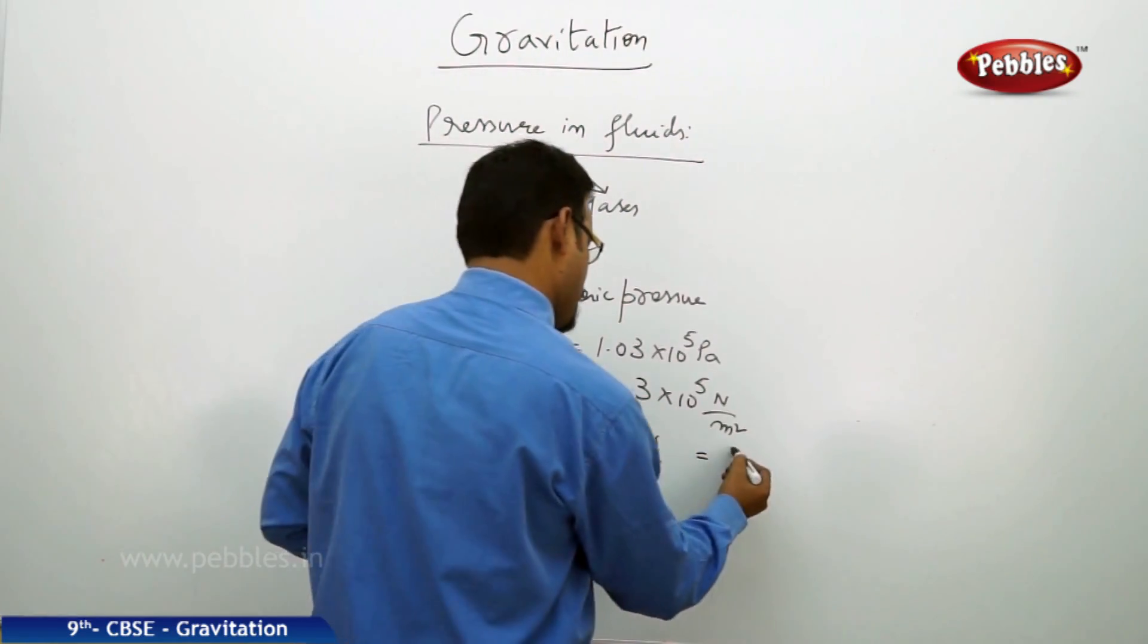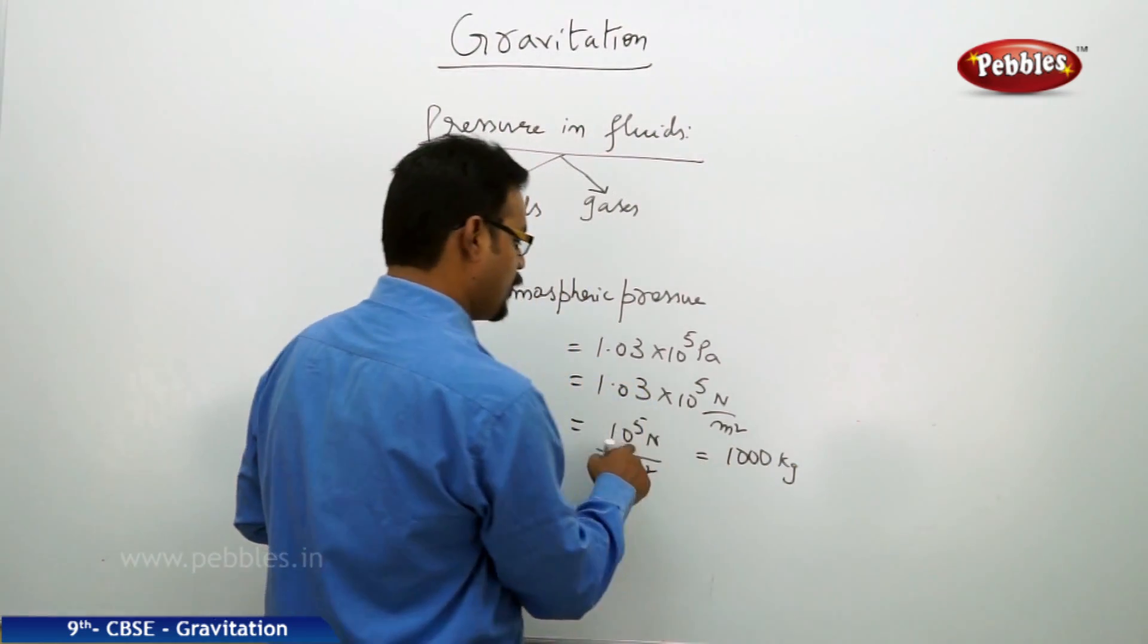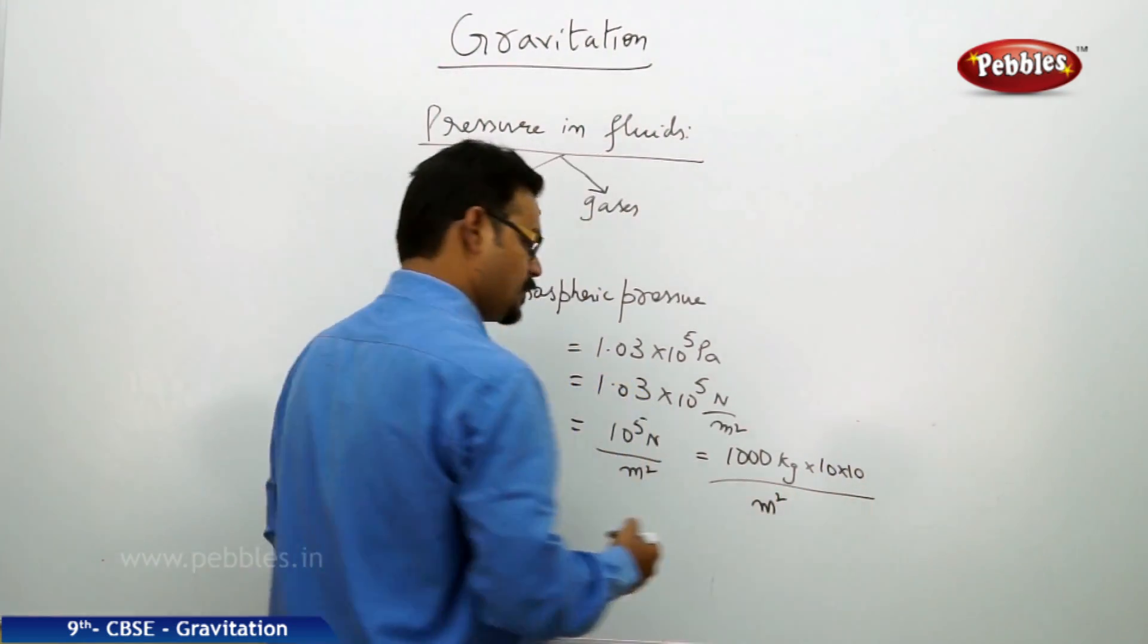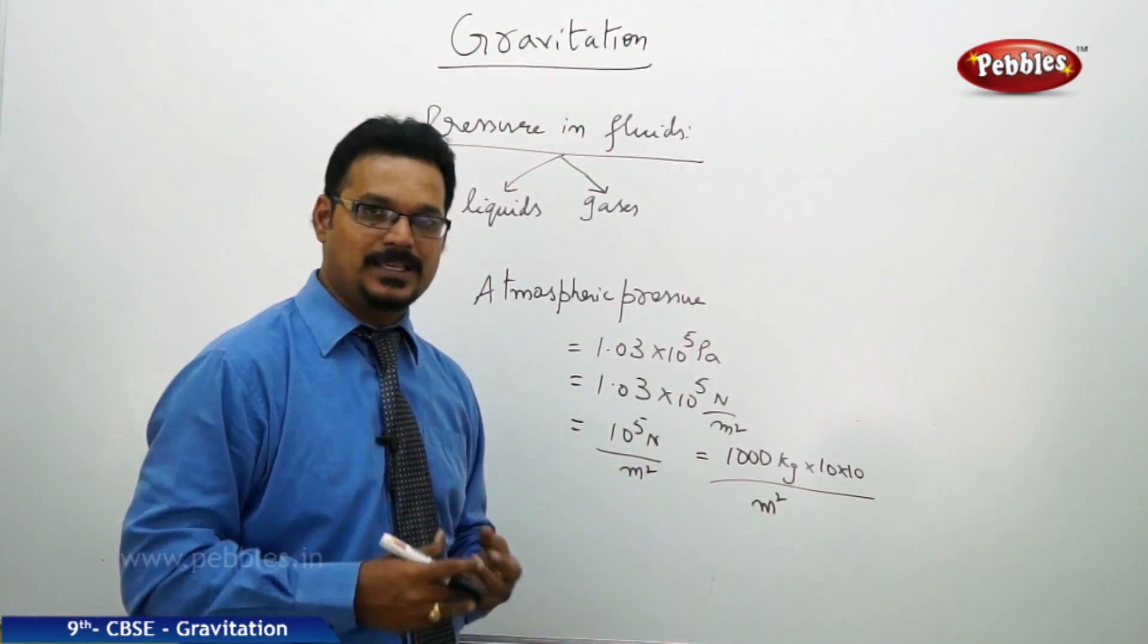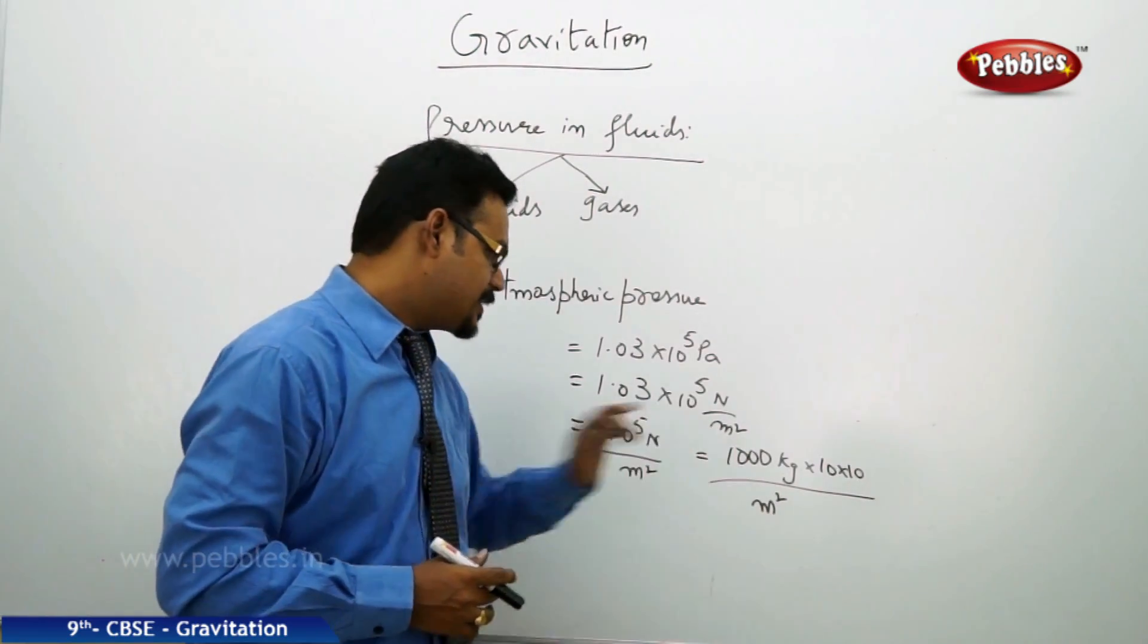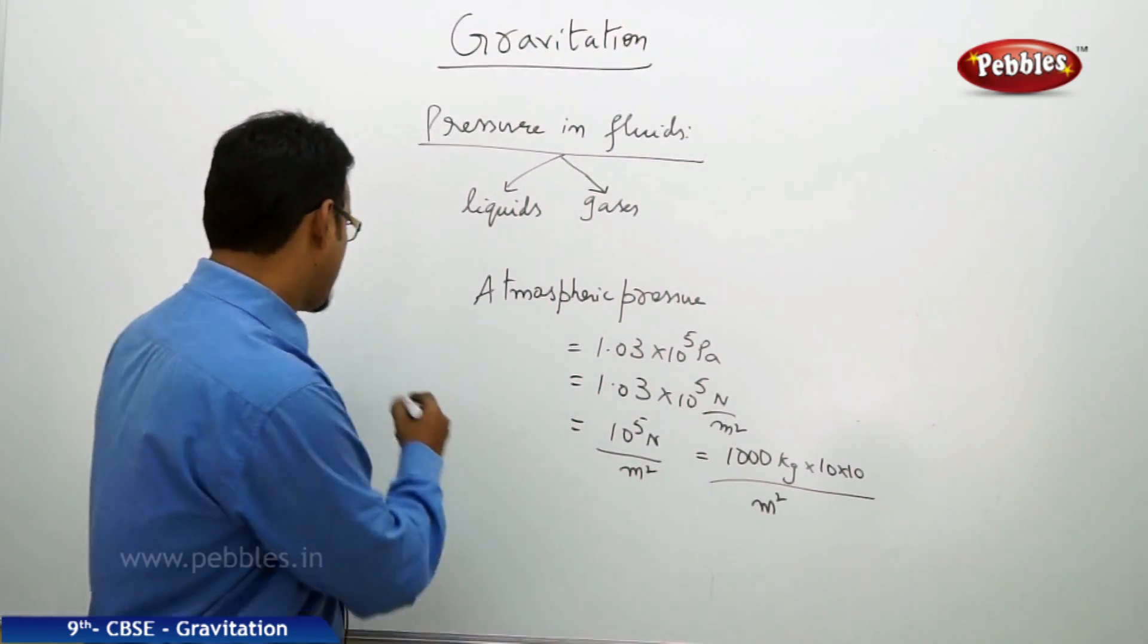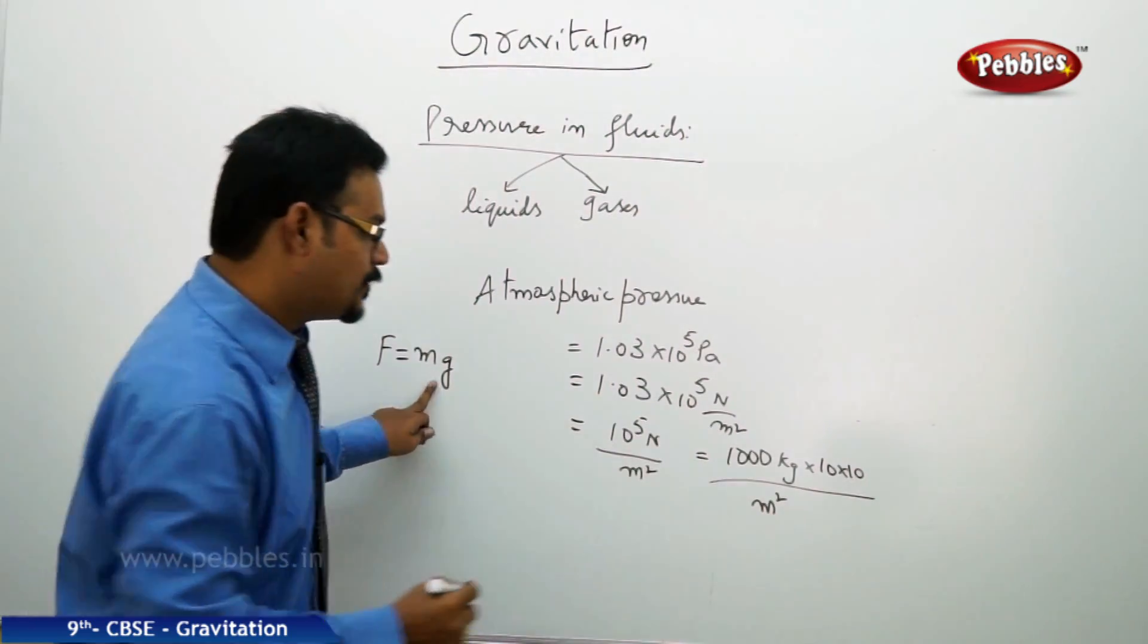Thousand kg. 10^5, so let me write 10 × 10^4 by meter square. So what I am doing here: say a lorry has a mass of 1000 kg. I have written Newton is nothing but force - force and weight, both are same. So force formula I can write MG. So G value is 10.